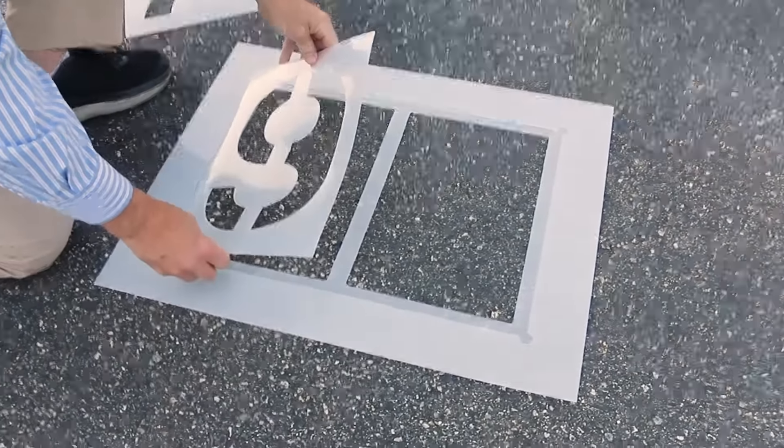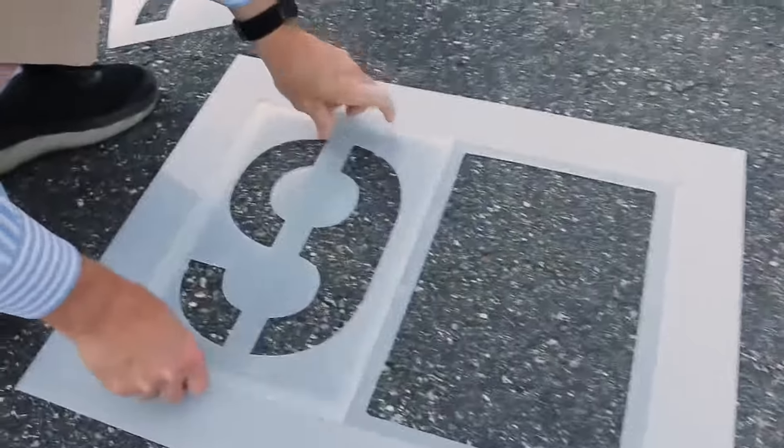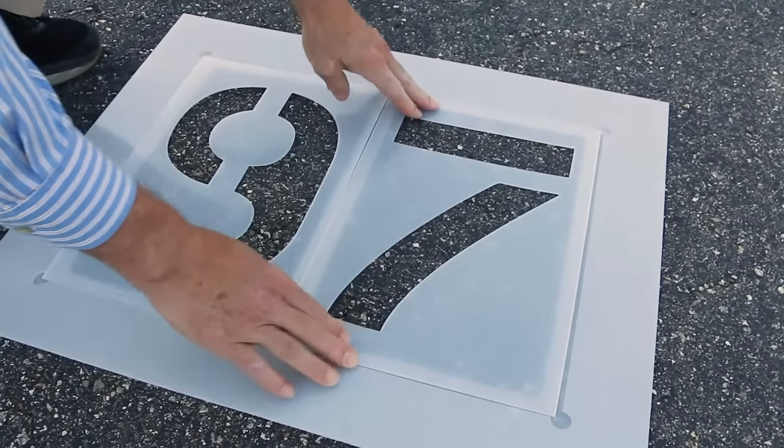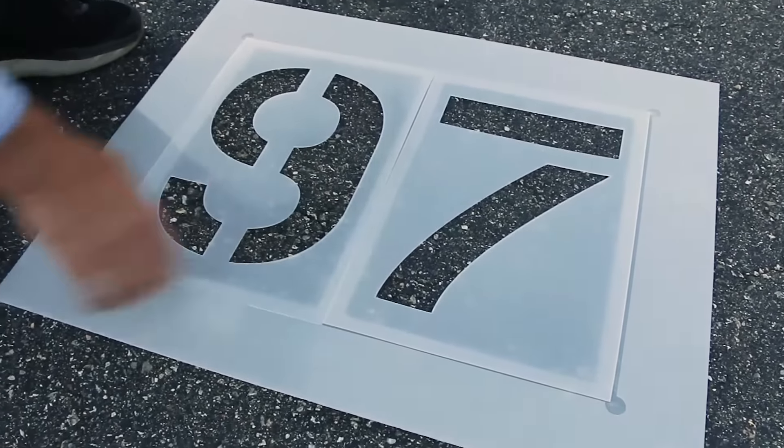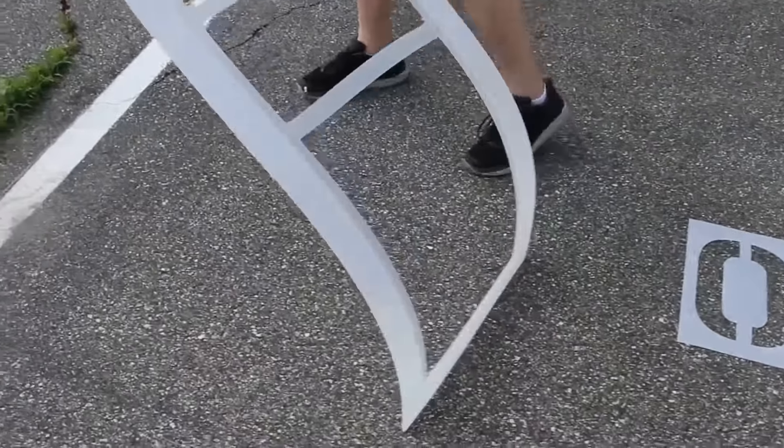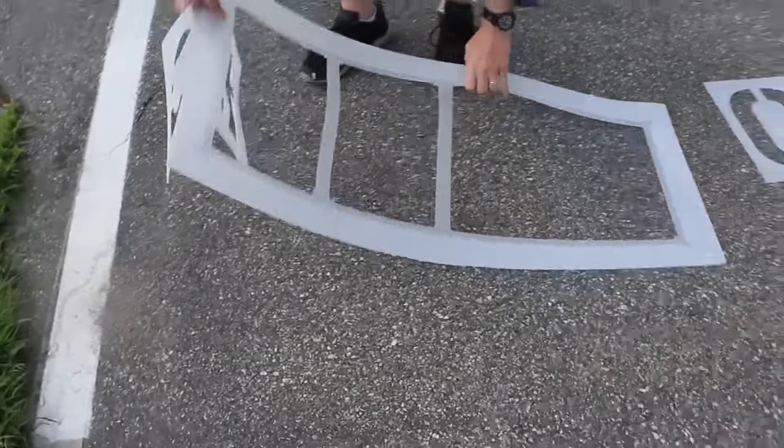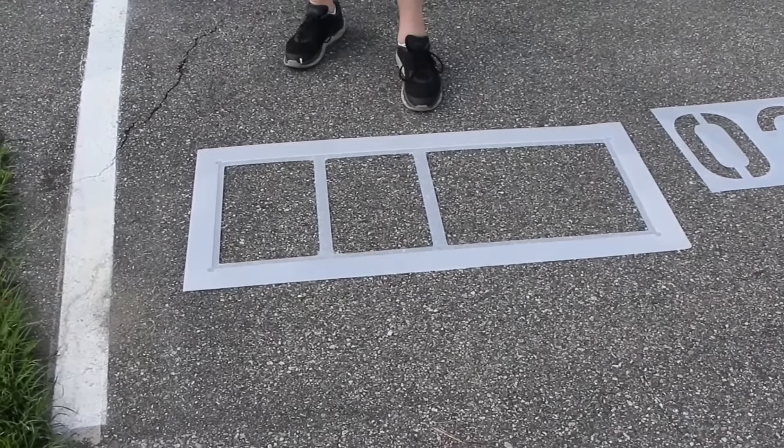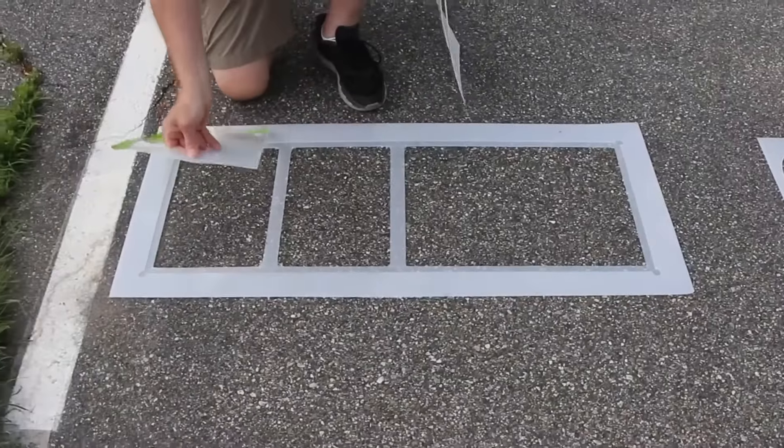For smaller projects, we offer a two-digit holder. Have more than 999 spaces? Or does your numbering system include letters? No problem! We also offer a four-digit holder and a full selection of alphabet stencils.